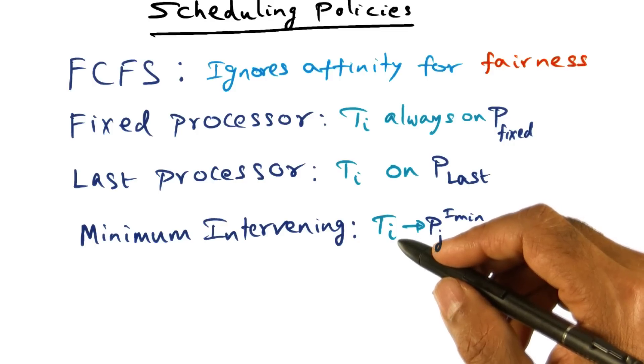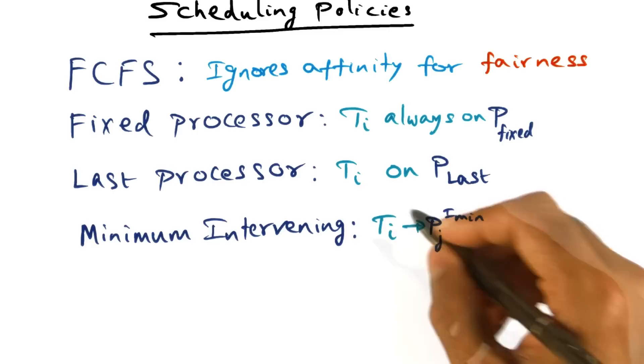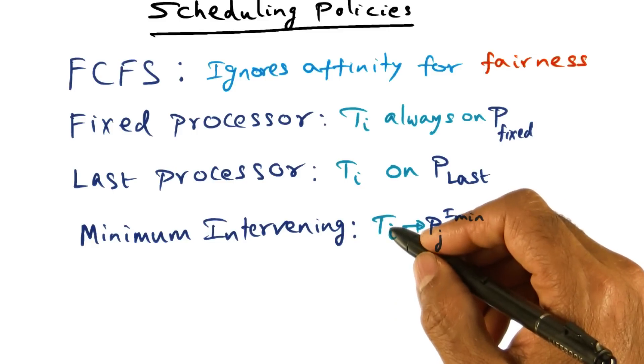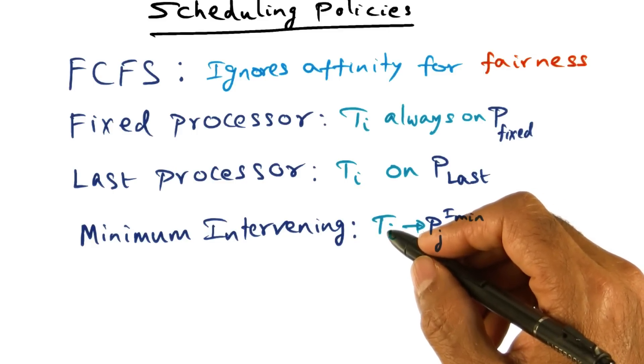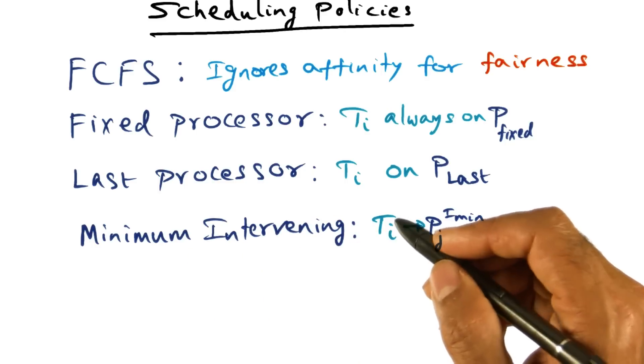If the affinity index is 20 or 30, I'm not going to pick that. So why bother keeping all of the affinity index for a particular thread? Just keep the top candidates. That's the idea behind limited minimum intervening scheduling policy.